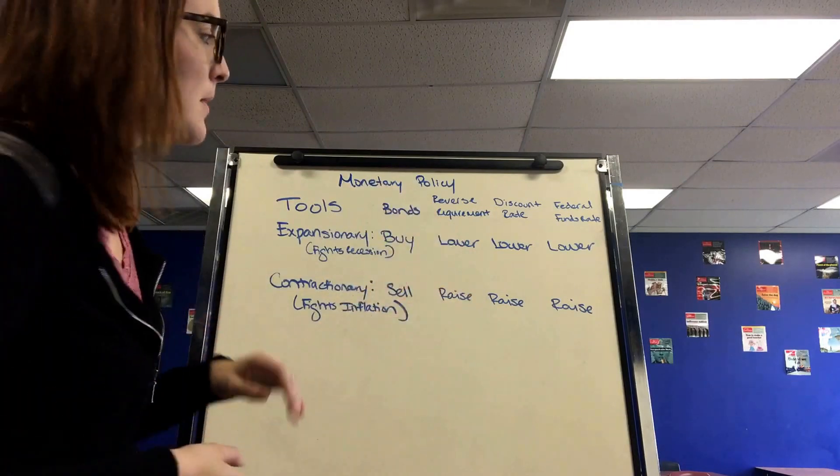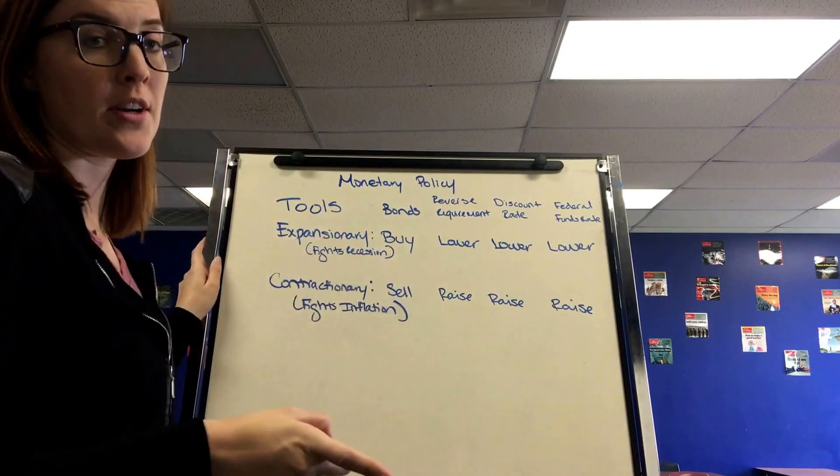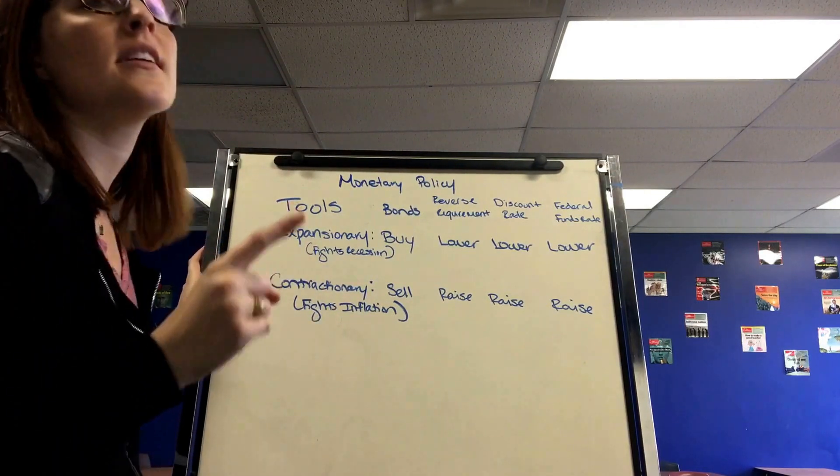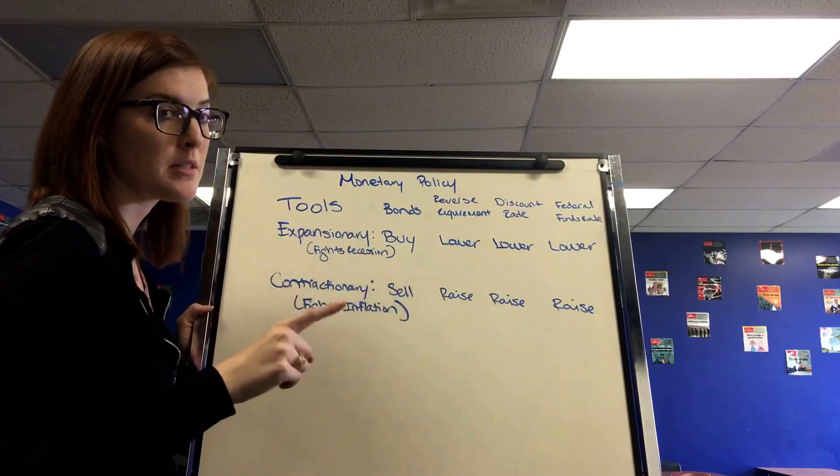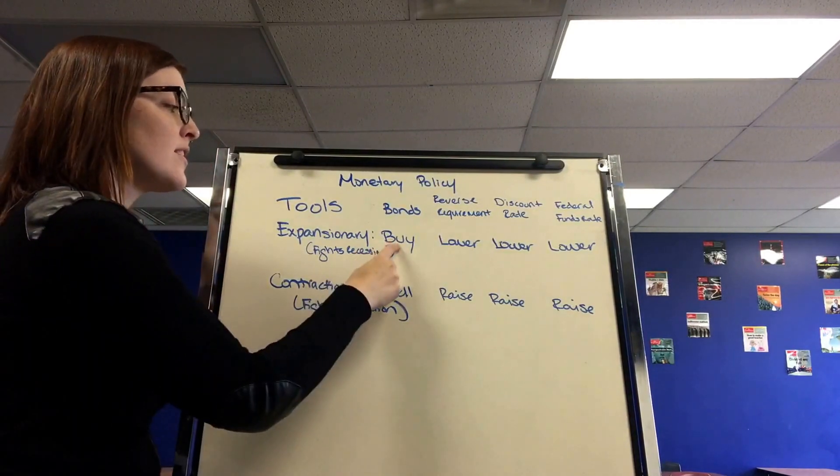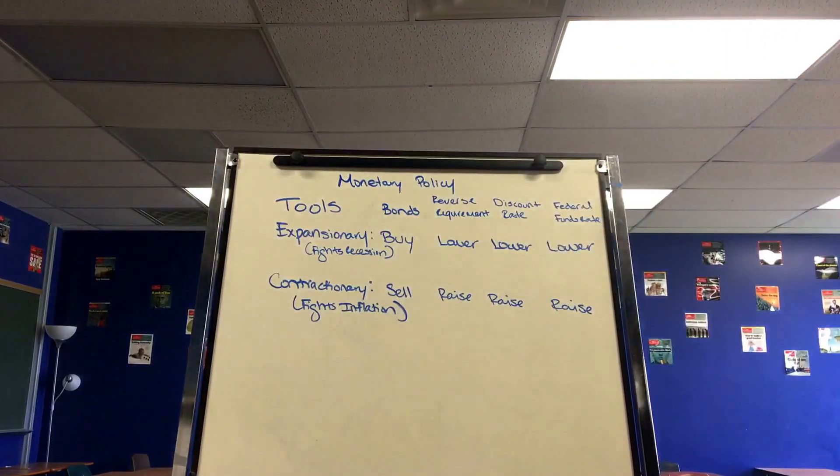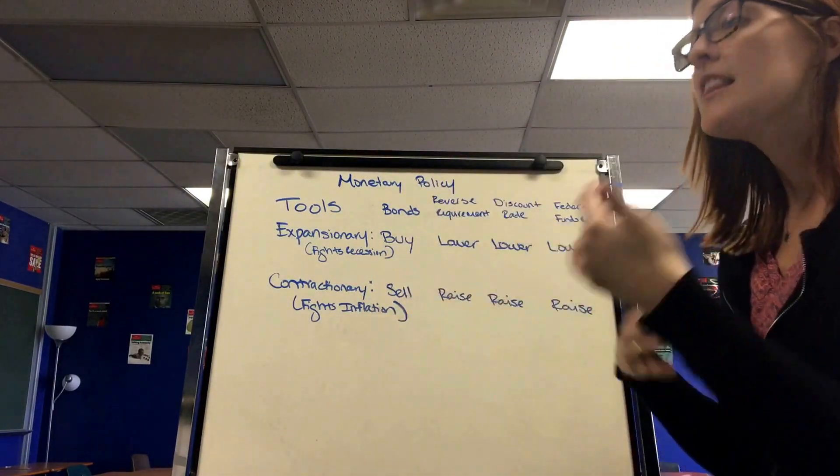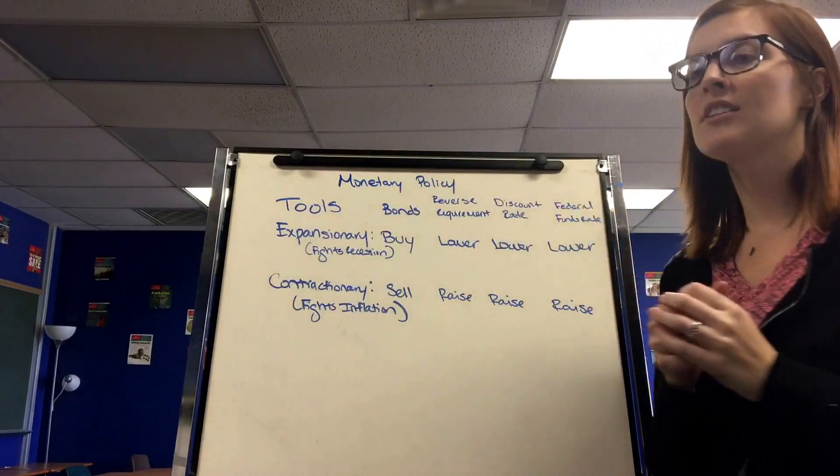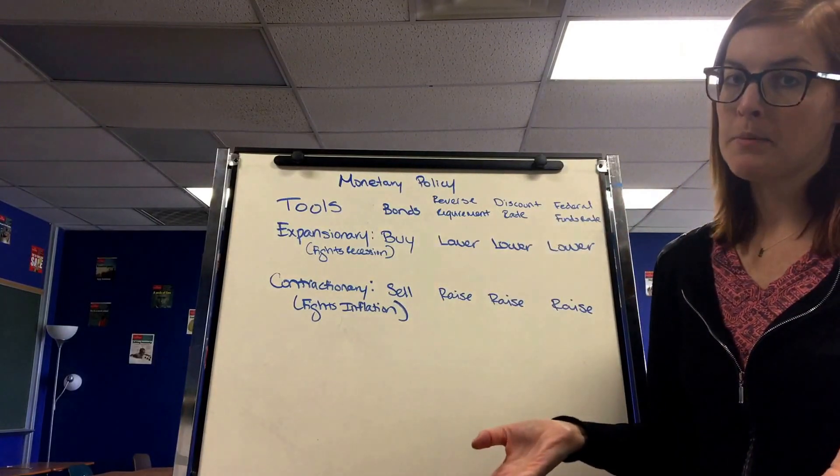The ways that they would increase the money supply include buying bonds, also known as open market operations, also known as government securities. So buying bonds, buy bonds, bigger money is a good way to think of this. This is when the Federal Reserve loans the government money. So if the Federal Reserve buys a $10 million bond from the government, they are loaning the government $10 million and the government can then use that to increase GDP. That's why it increases the money supply.